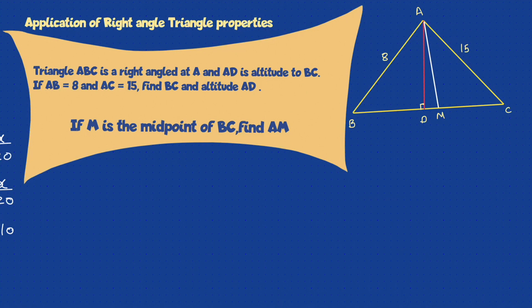So now we know what are the results that we can get with a right-angled triangle. Let's apply everything we have learned. Now triangle ABC is given to me as a right-angled triangle at A. So I know angle A equals 90 degrees. Then what? AD is altitude. If it's an altitude, it's just a perpendicular. AD is an altitude to BC. Now remember the properties of altitude that we have seen. AB is given to be 8, AC is given to be 15. Find out BC and the altitude AD.